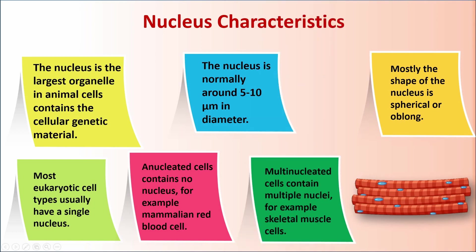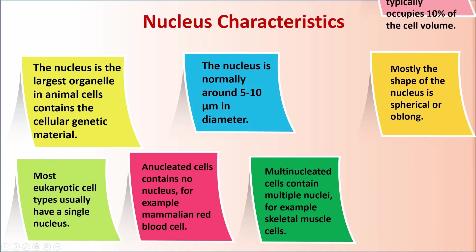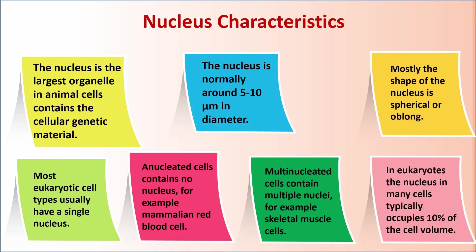Multinucleated cells contain multiple nuclei — for example, skeletal muscle cells. In eukaryotes, the nucleus in many cells typically occupies 10% of the cell volume.